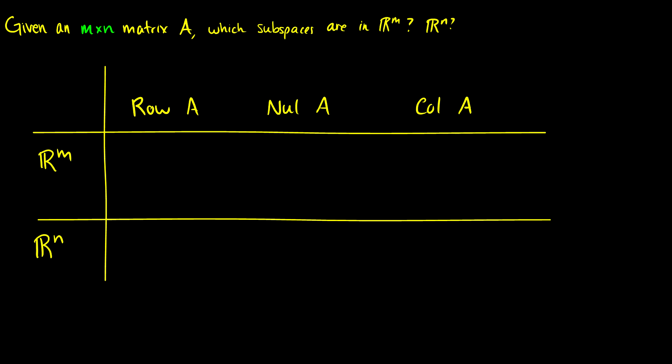We're going to tackle two questions that talk about the row space. For the first one we're given an m by n matrix A and we just want to identify where the subspaces are. Are they in R^m or R^n? Now the reason I ask this is because this is a question that's usually really simple to answer, but in an exam situation you might panic and get it wrong.